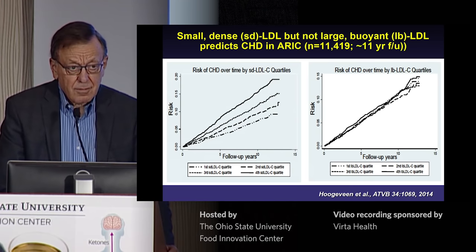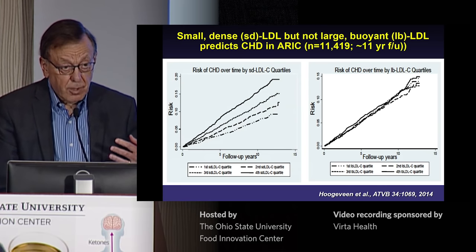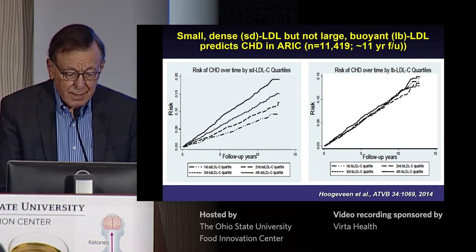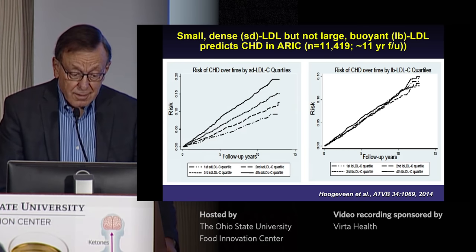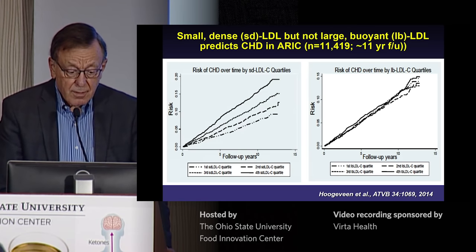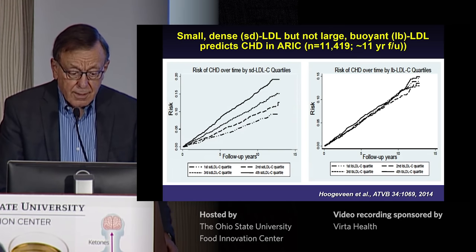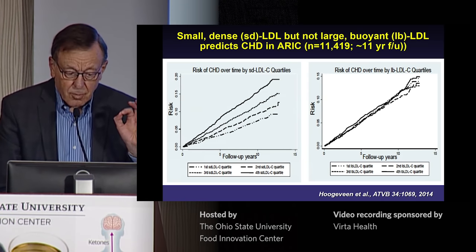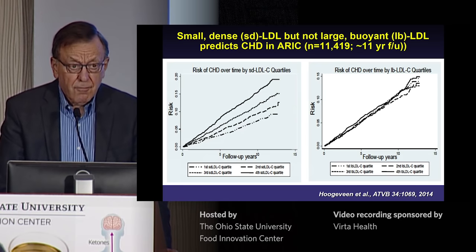The literature is quite extensive examining the relationship of LDL particles to cardiovascular risk, though it is somewhat methodology-dependent. One of several studies convincingly shows a discordance between large buoyant LDL and small dense LDL in their relationship to cardiovascular disease risk. In the ERIC study, quartiles of small dense LDL cholesterol on the left are progressively related to increased risk, whereas there is absolutely no relationship at all for the large buoyant variety.